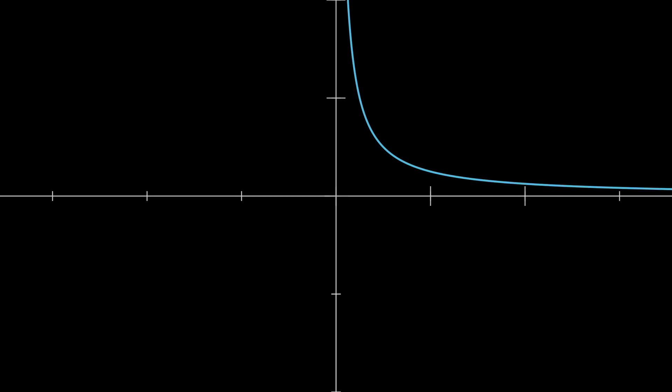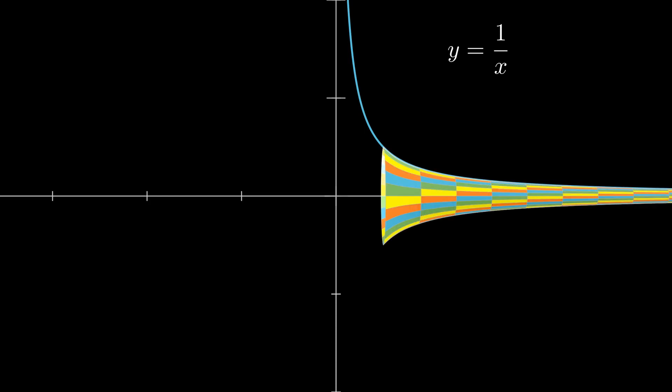It is a surface of revolution formed by revolving the curve y equal to 1 by x around the x-axis. This generated surface has an infinite surface area, but a finite volume, which forms the apparent paradox.